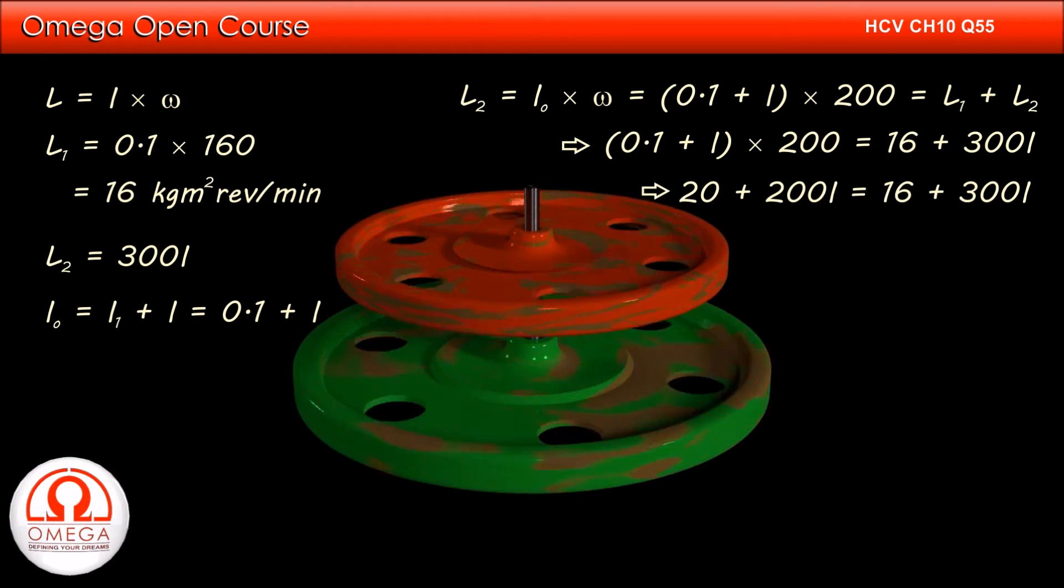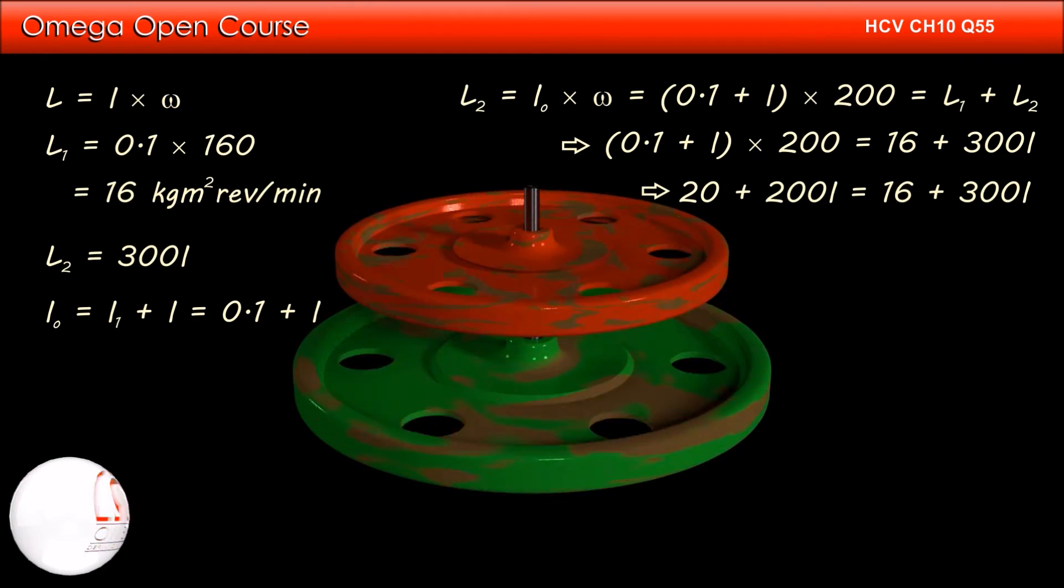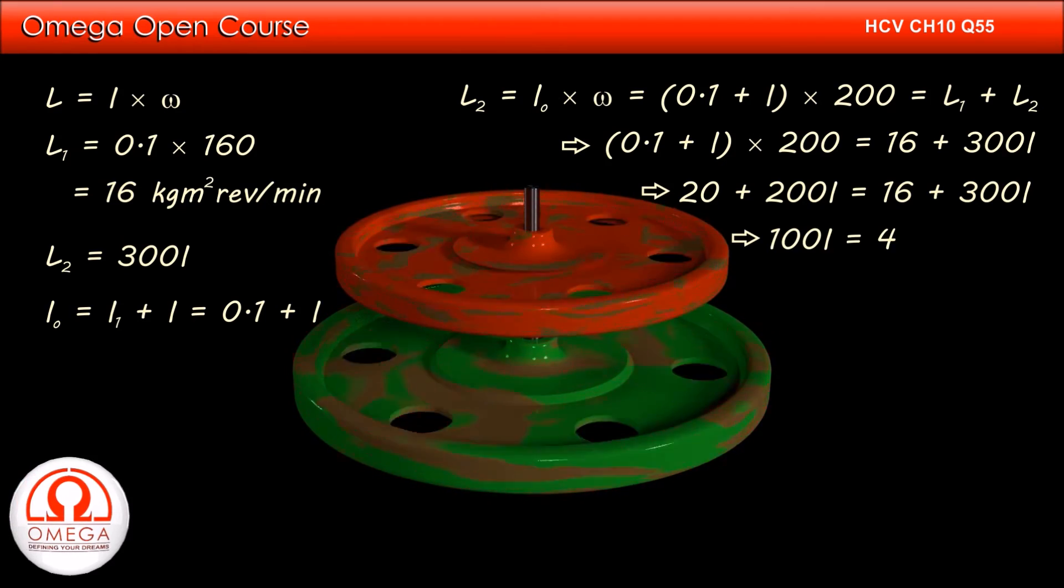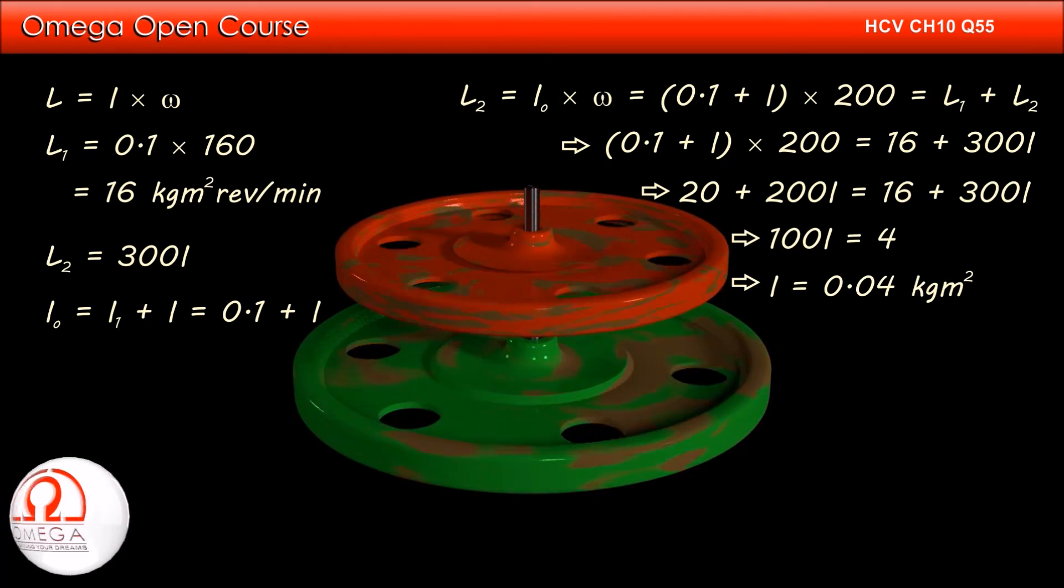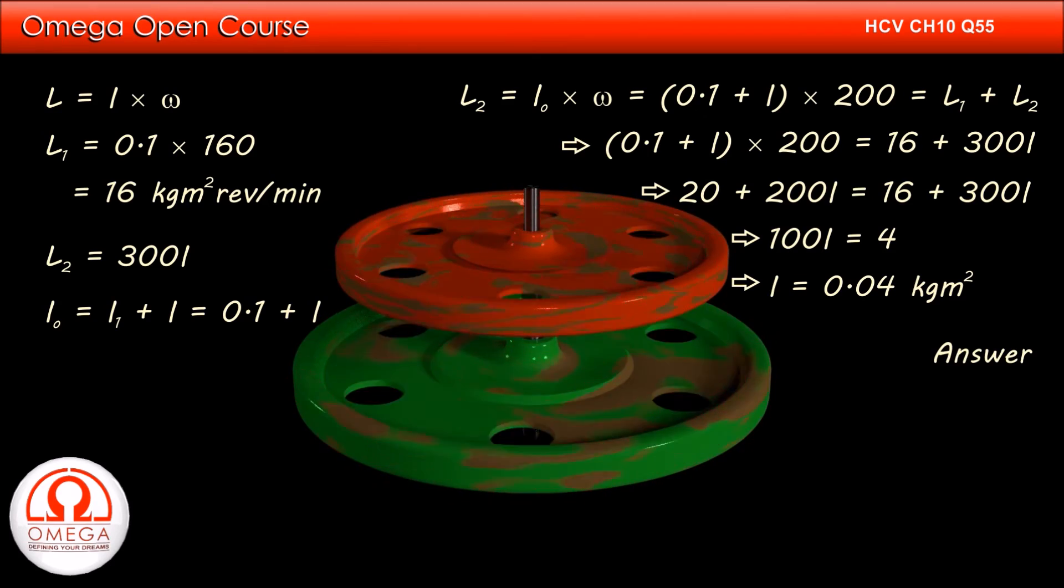This implies 20 plus 200i is equal to 16 plus 300i or 100i is equal to 4. Thus, i is equal to 0.04 kg meter square. This is our answer.